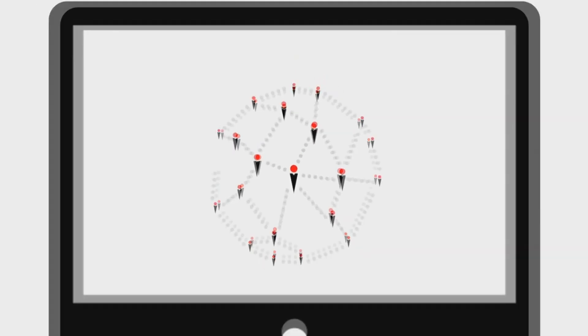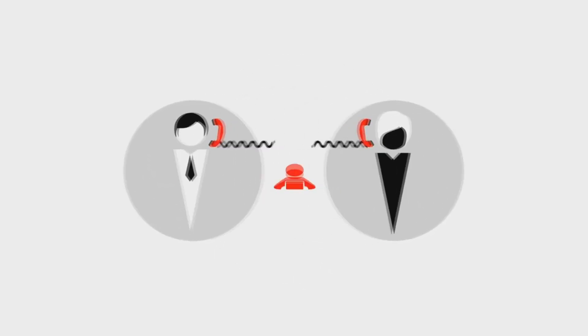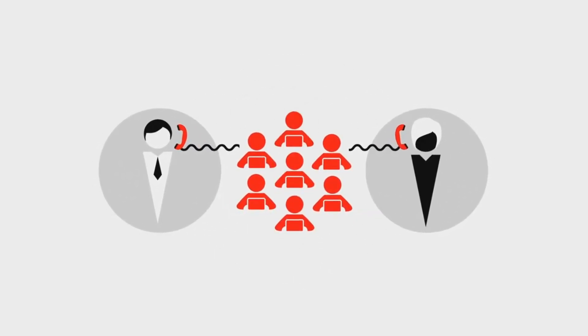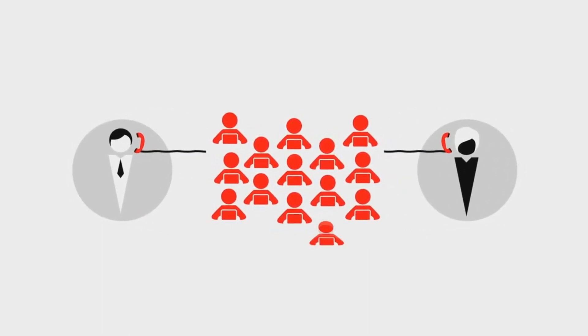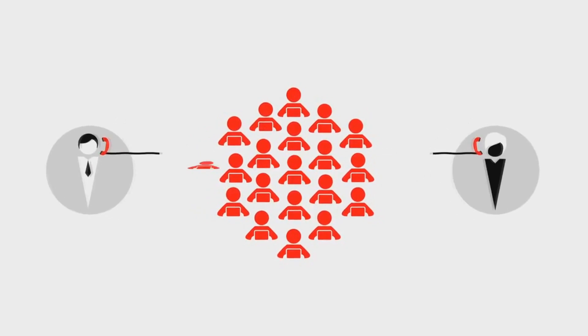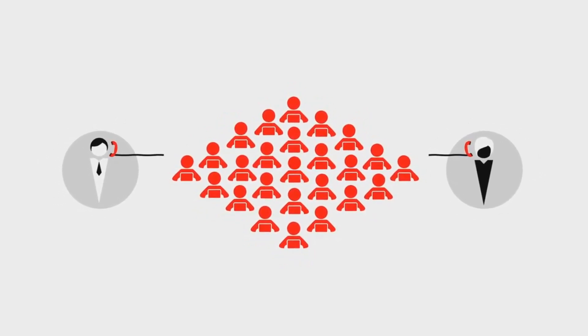A lot's changed since the 1960s. Everyone's connected. Computers run everything, like our banks and financial markets, processing billions of transactions a day. But some things haven't changed. When Bob wants to make a transaction with Alice, they each need people to record the transaction, then validate it, then check what the other side recorded — over and over, each time something changes. That's a lot of people and a lot of work.